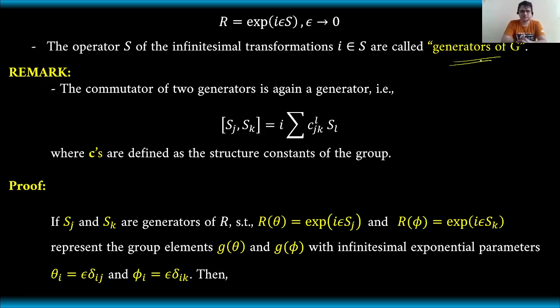We have to consider this remark that the commutator of two generators is, again, a generator. That is, suppose we have these two generators S_j and S_k, and if we're going to get the commutator of these two, it's actually equal to this term in the right hand side, which is a generator, where c's are defined as the structure constants of the group.